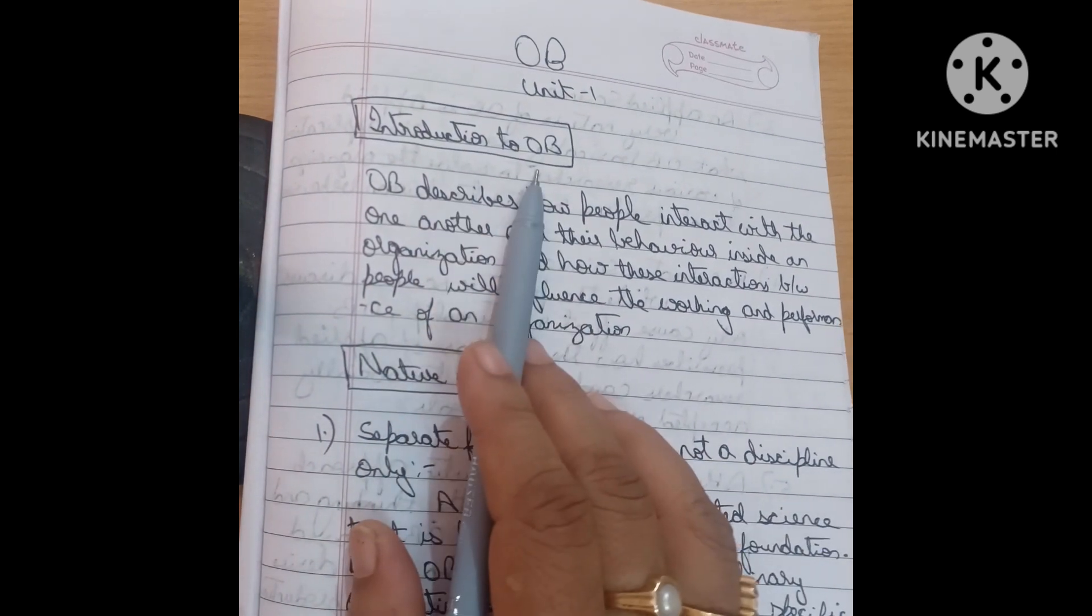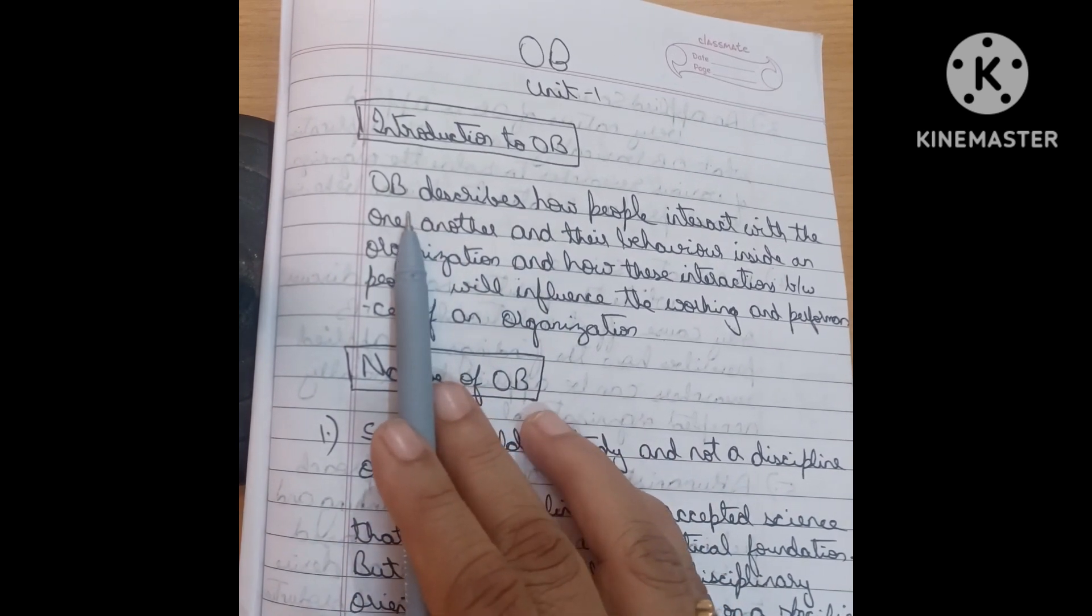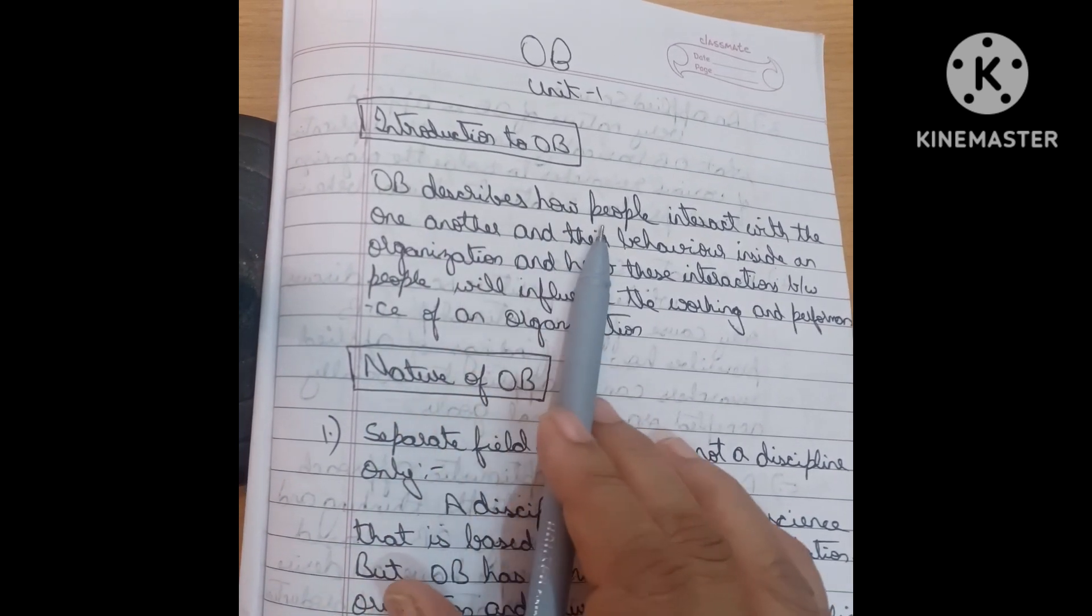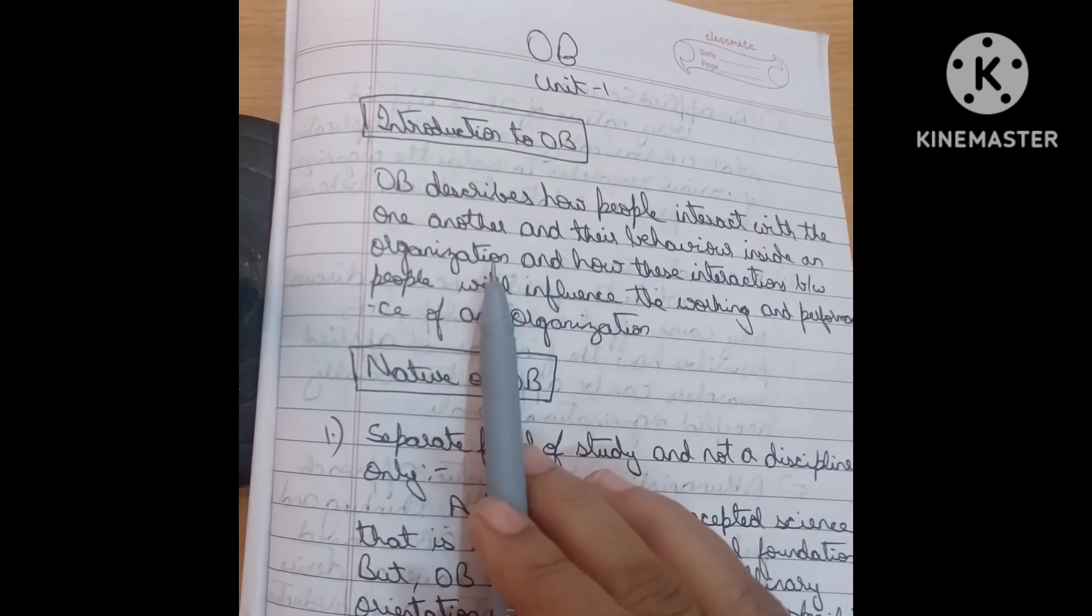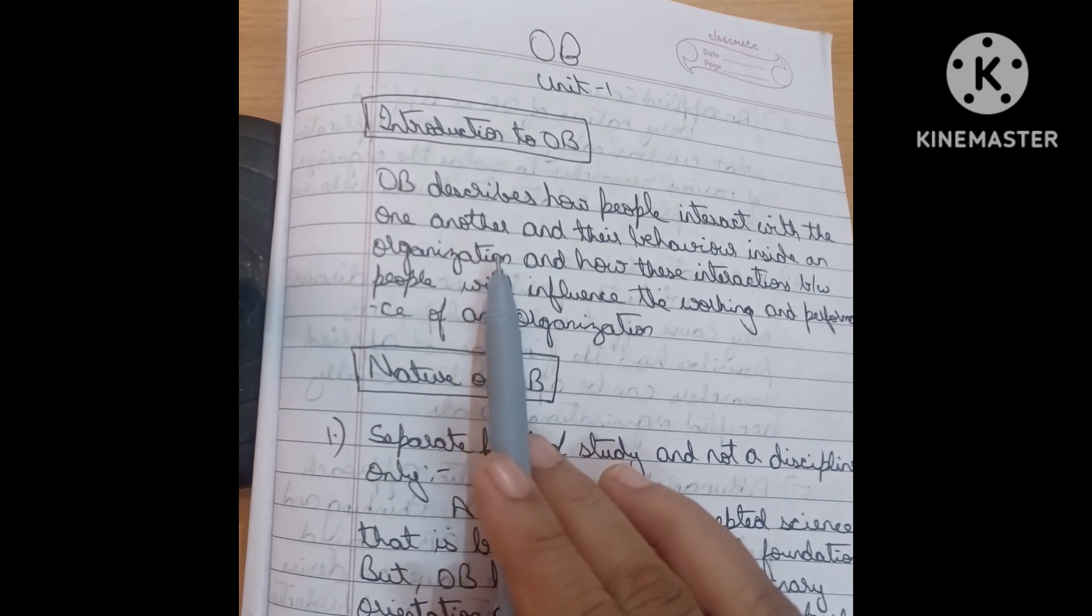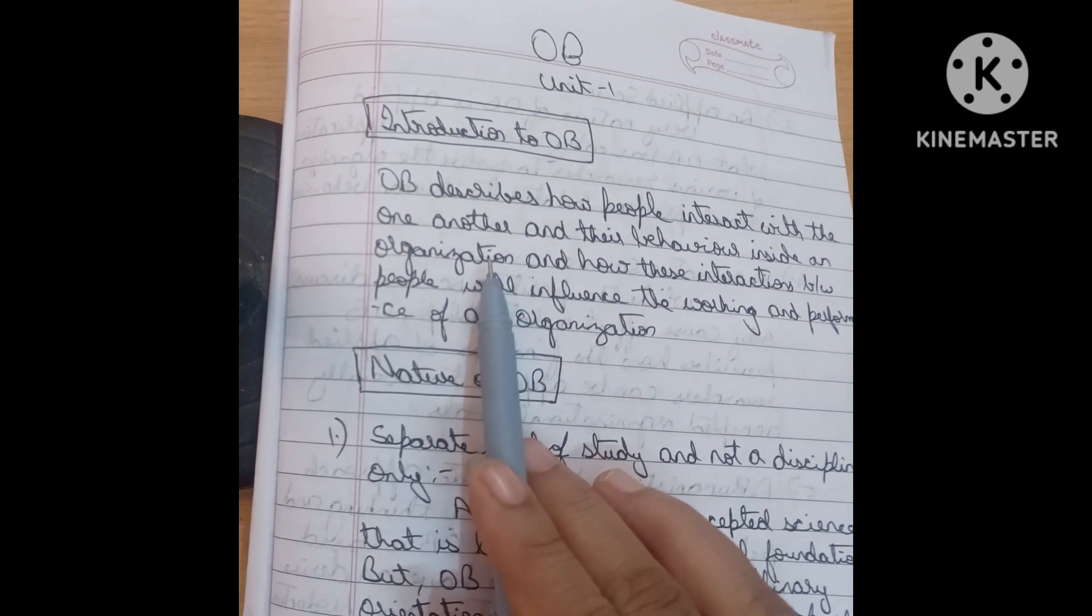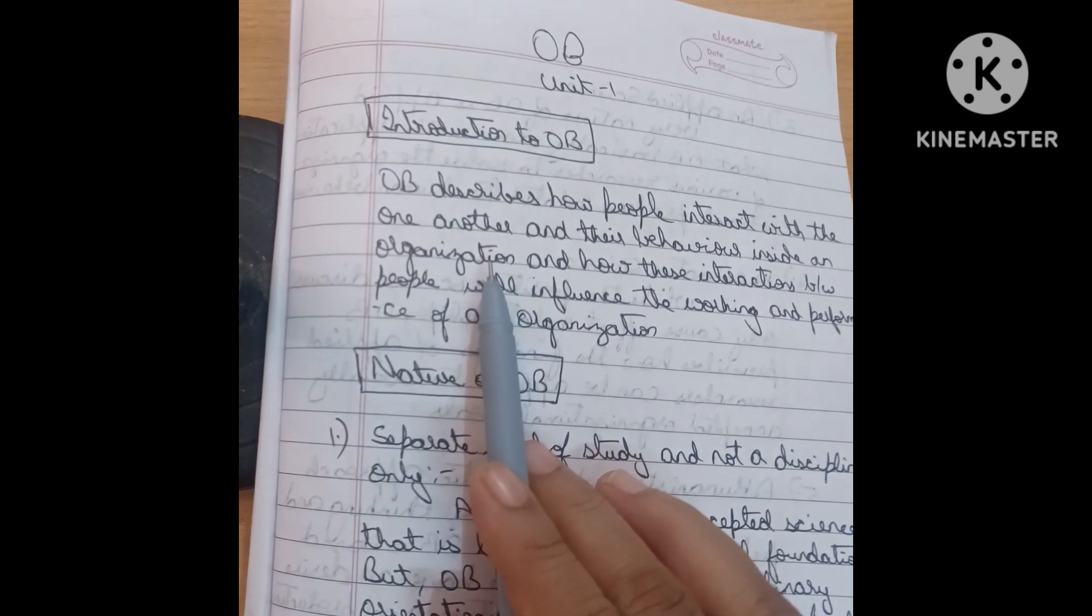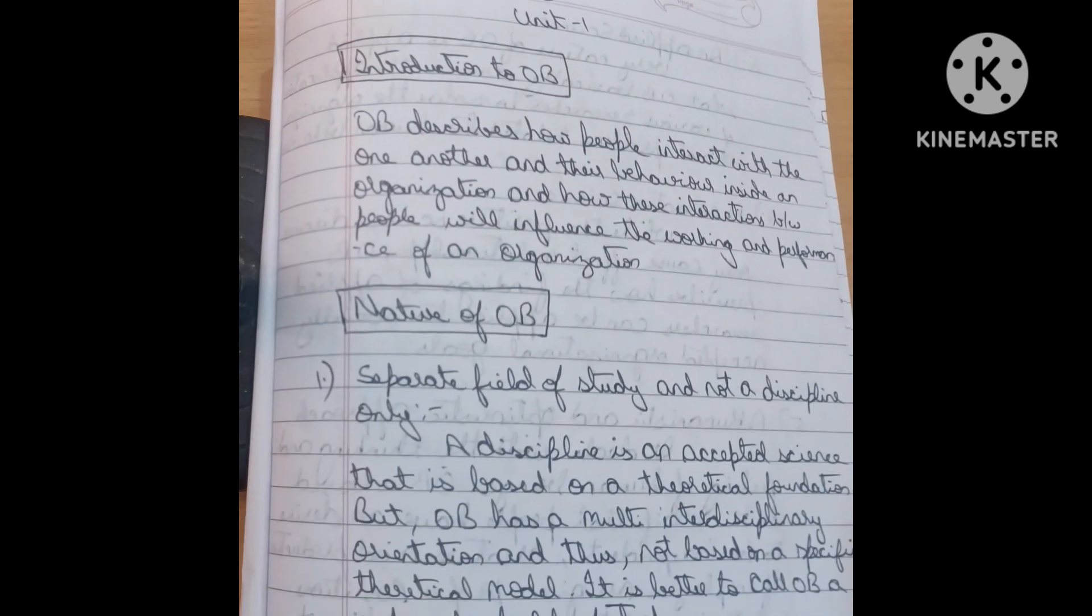First question is introduction to OB. We just write the OB. OB describes how people interact with one another and their behavior inside an organization. Organizational behavior explains how the people are interacted with one to another, how to behave with their colleagues and in working atmosphere. That is the concept of OB.